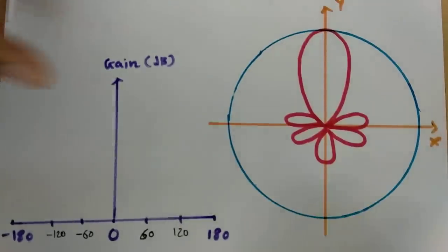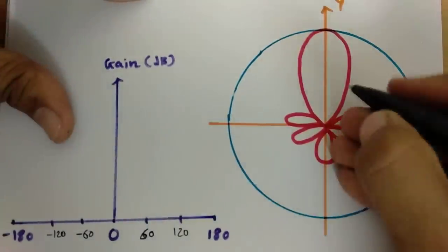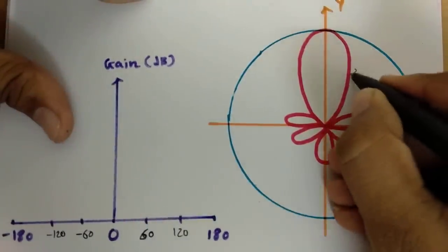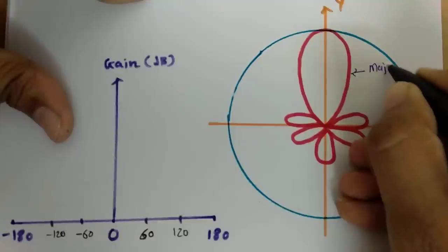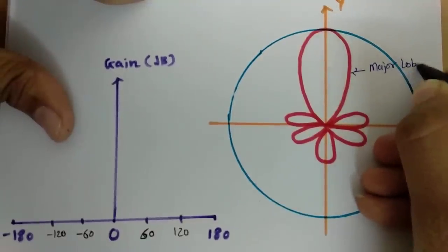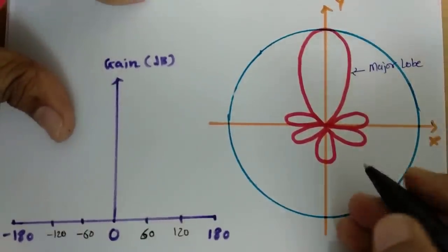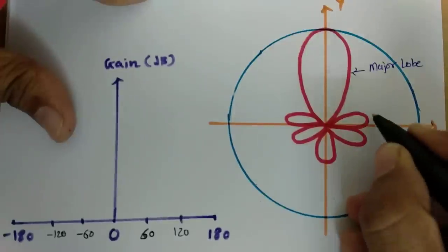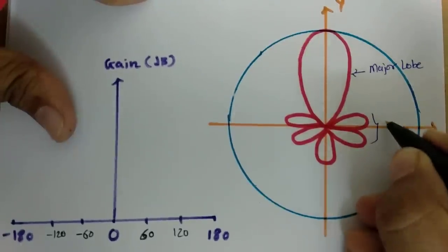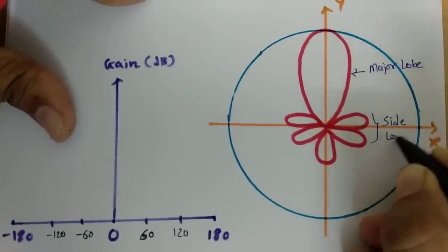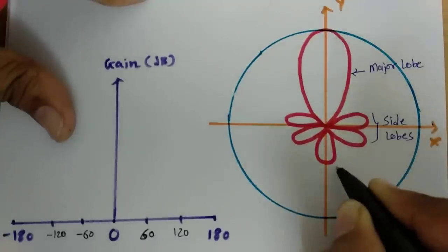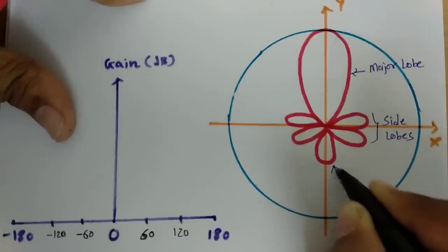This is the major lobe of the radiation pattern. These are side lobes and this is the back lobe.